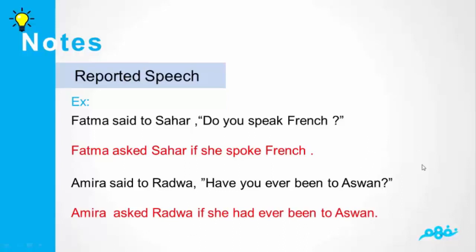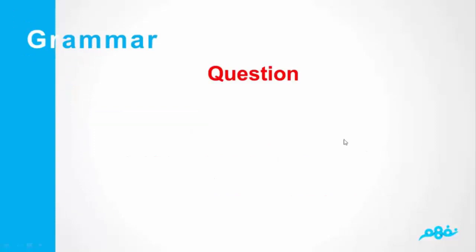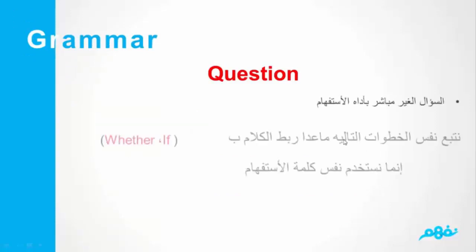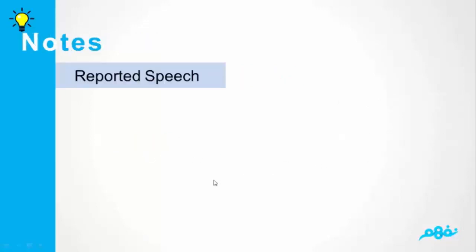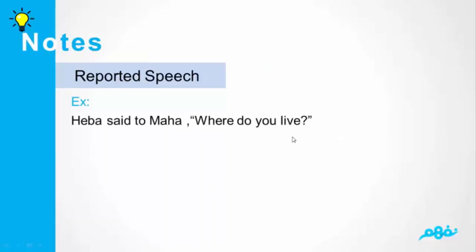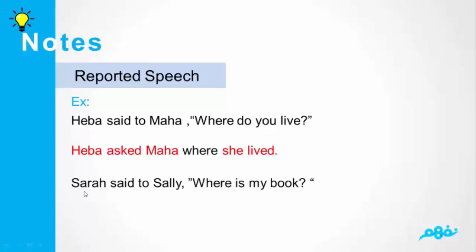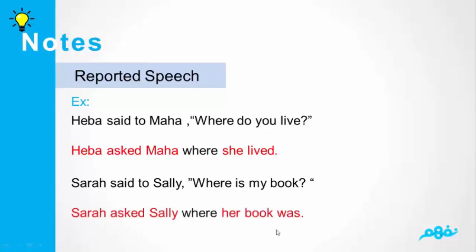دول كانوا سؤال بيبدأ بفعل مساعد. طيب لو عندي سؤال بيبدأ بأداة استفهام، قلنا هنربط بنفس أداة الاستفهام، مش هنحط if أو whether. هبة said to مها — where do you live? هنا بيبدأ بأداة استفهام، يبقى هنربط بيها. هبة asked مها where she lived. سارة said to سالي — where is my book? سارة asked سالي where her book was.